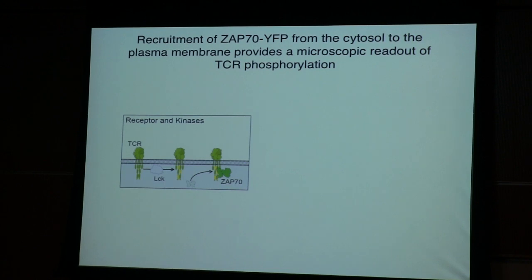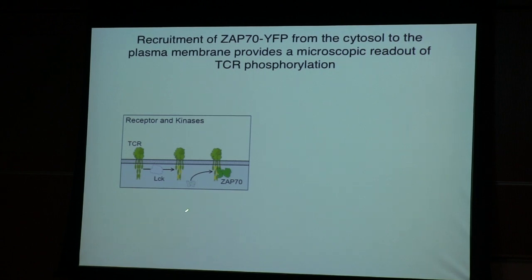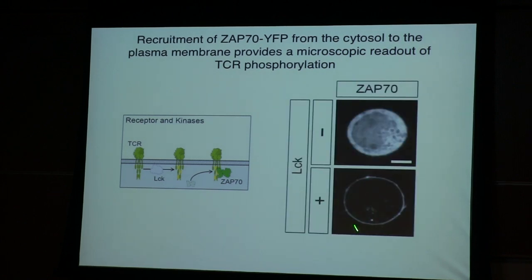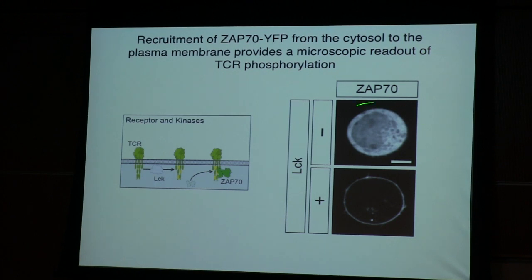Let me show you the key readout that John used for phosphorylation. Rather than using radioactivity, a more powerful way is a visual readout to see the phosphorylation in real time. When the TCR gets phosphorylated, the second kinase ZAP70 binds to these phospho-ITAM domains and translocates from the cytoplasm to the plasma membrane — a reaction you can follow by microscopy. Without the LCK kinase, ZAP70 is all over the cytoplasm. With the kinase present, it's recruited to the rim of the cell. So this membrane recruitment of ZAP70 will be our readout.